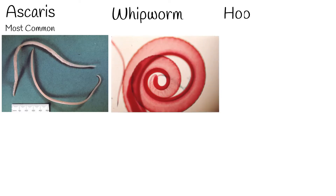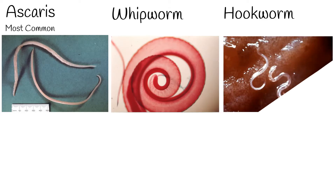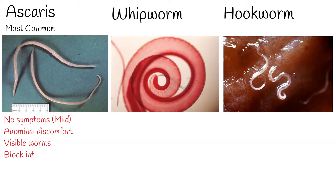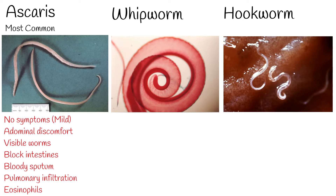Signs and symptoms: most parasitic infections are mild and show no symptoms. Ascaris can cause mild abdominal discomfort and once-a-year passage of clearly visible worms on close inspection in the stool. In severe cases it can block the intestinal lumen and cause growth problems among children. It can also cause bloody sputum, cough, and pulmonary infiltration. In the blood, eosinophils can be elevated, but eosinophilia is not specific for helminthiasis — it can also occur in asthma and allergic reactions. The standard method for diagnosing Ascaris is by identifying Ascaris eggs in a stool sample using a microscope.